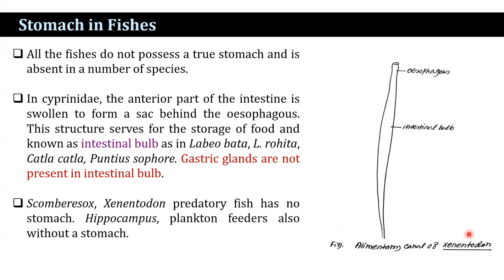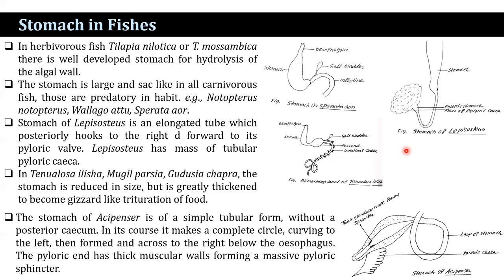Gyenotrodon, a pipefish, has no stomach. Hippocampus, the seahorse, is a plankton feeder also without a stomach. In herbivores, Tilapia nilotica and Tilapia mozambica, there is a well-developed stomach for the hydrolysis of algal walls. The stomach is large in carnivorous fishes such as Wallago attu, Sperata aor, Notopterus, and Chitala chitala.